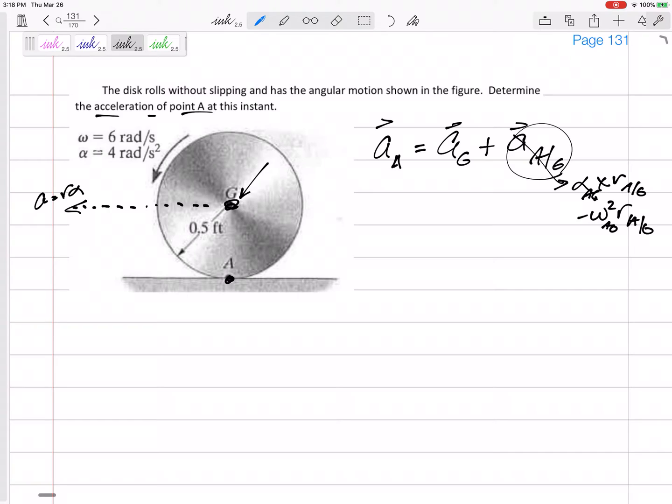So this is kind of an interesting problem. We are told both the alpha and the omega of that rigid body. We know this R that goes from G to A. You always know that because it's just from the figure. And we know the acceleration of point G.